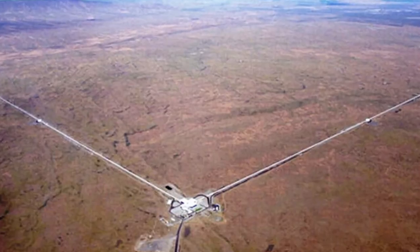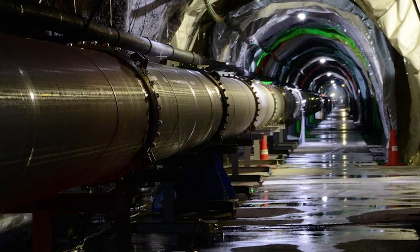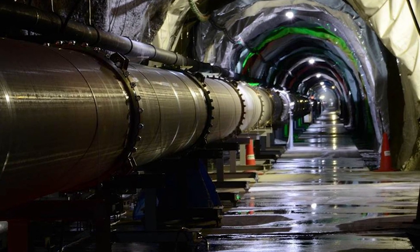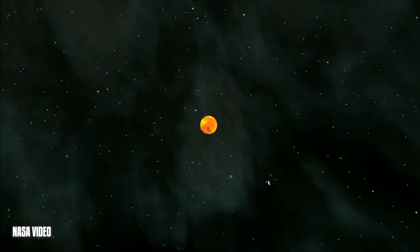We could have a million LIGOs with much higher precision and they simply won't be able to capture these low frequency events. So what we need in order to capture low frequency gravitational wave events are pulsars. You see, pulsars serve as a natural, nature's own gravitational wave detector. And it works like this.